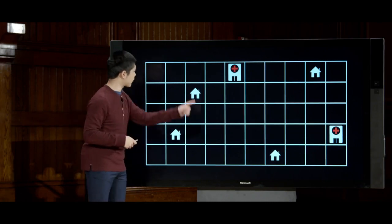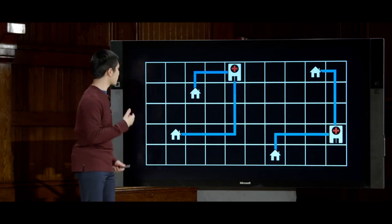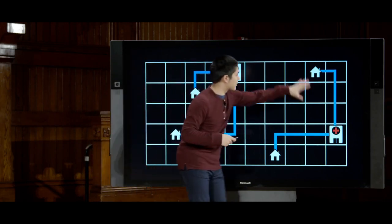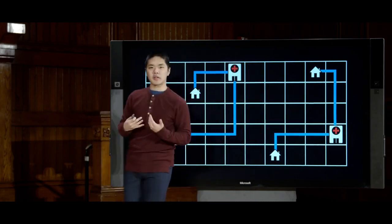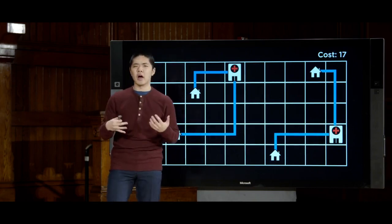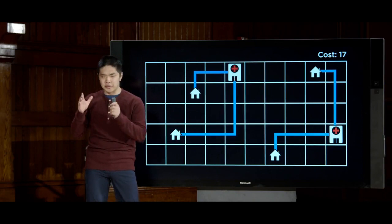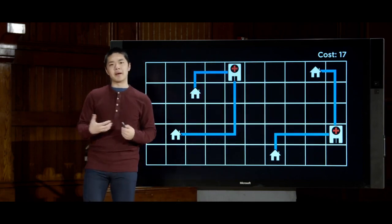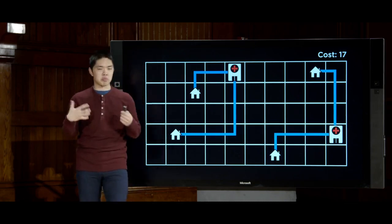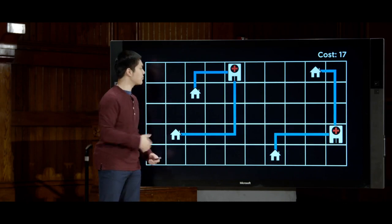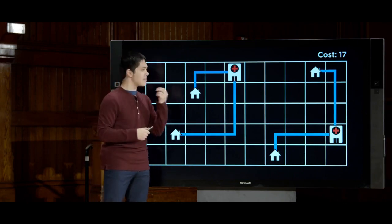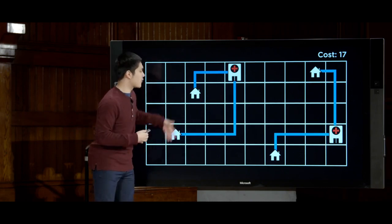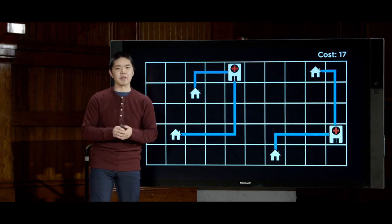If you take each of the four houses and figure out how close they are to their nearest hospital, you get distances of 3, 6, 4, and 4, giving a total cost of 17. The goal is to apply a search algorithm to minimize that total cost — the sum of all distances from all houses to their nearest hospital.